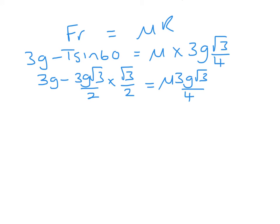On the left hand side I have 3g minus 9g over 4, which simplifies to 3g over 4 equals mu 3g root 3 over 4.